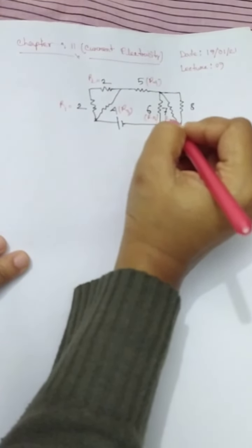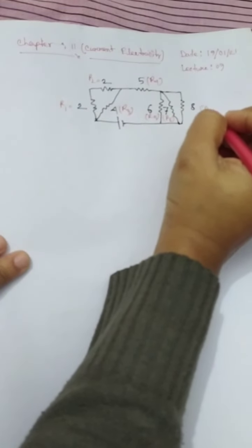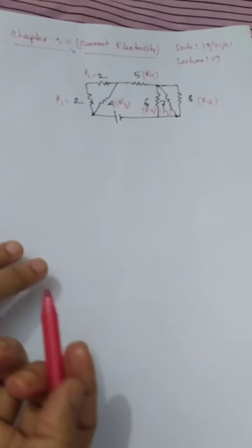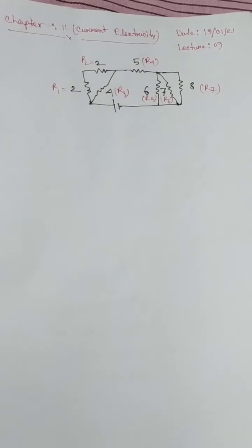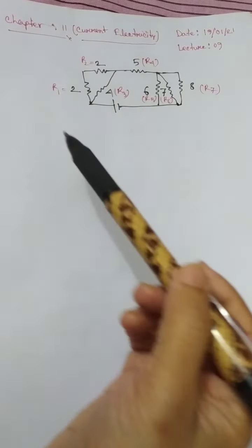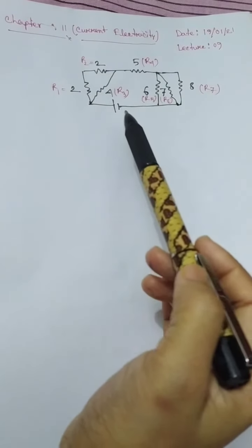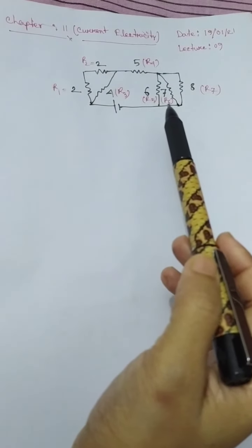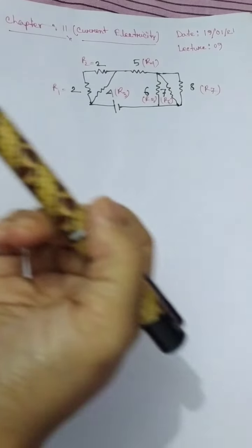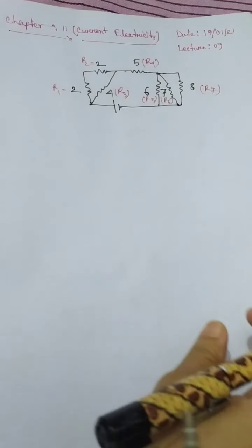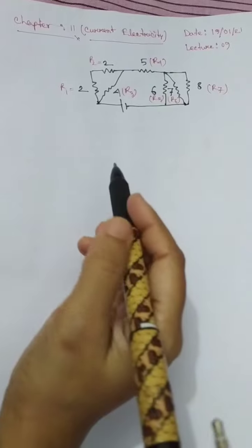For convenience in our calculation, we are denoting the resistors as R1, R2, R3, R4, R5, R6, and R7. Now we are going to simplify this circuit.